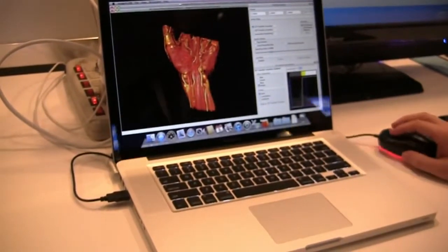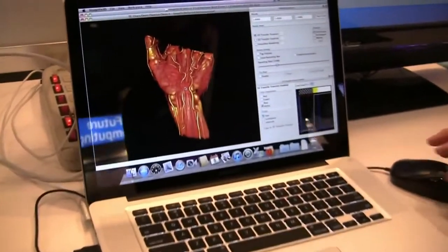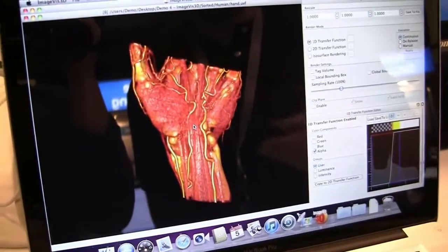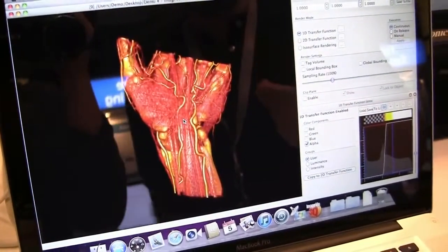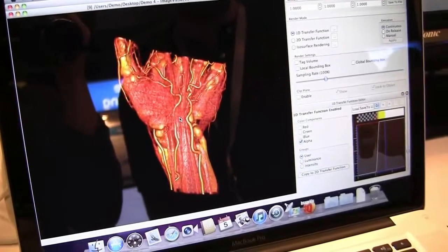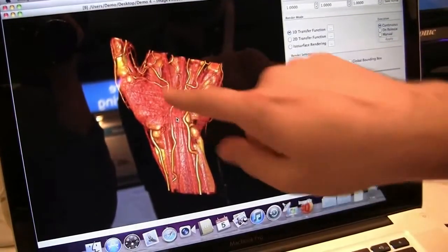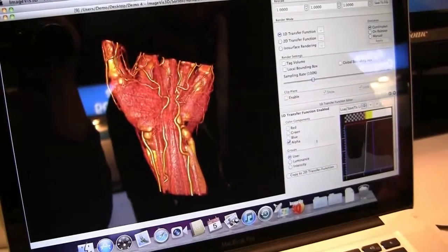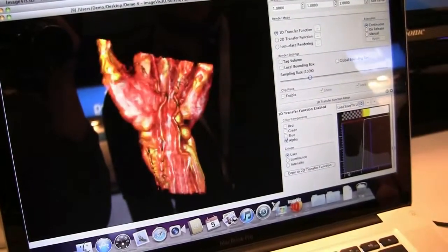Also, what we can do is we can change the transfer function. A transfer function assigns from a certain value, which we get from our volumetric data, a certain color to it. In this case, we assign red to the flesh colors. We have this yellow for these arteries. And we can change that now and look at very different aspects of our model.